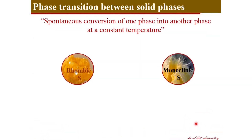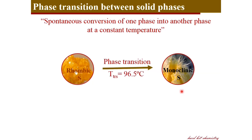Another kind of phase transition is the transition from one crystalline phase to another crystalline phase — one solid form to another solid form. For example, the conversion of the rhombic form of sulfur to monoclinic sulfur. Rhombic and monoclinic are two different crystalline forms of sulfur, and this conversion occurs at a characteristic temperature of 96.5 degrees, which is the phase transition temperature for this process.